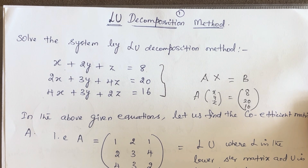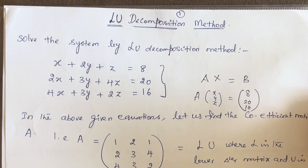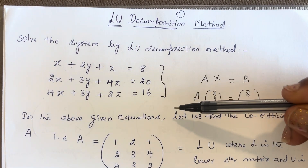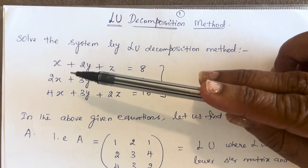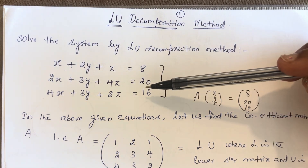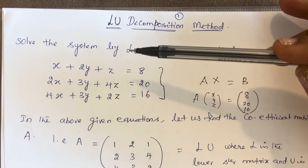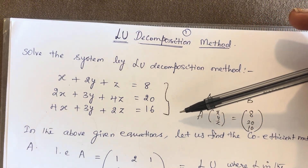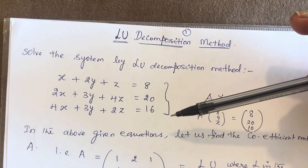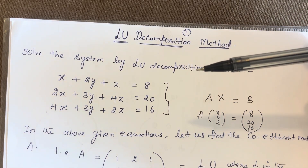Hi dear students, welcome to my channel. In this video, I am going to teach how to solve the system of equations by using LU decomposition method. There are three given equations: x plus 2y plus z is equal to 8, 2x plus 3y plus 4z is equal to 20, and 4x plus 3y plus 2z is equal to 16. These three equations we need to solve by using LU decomposition method.